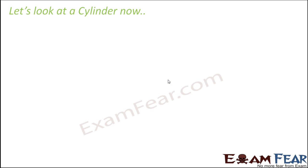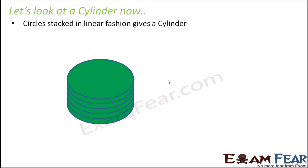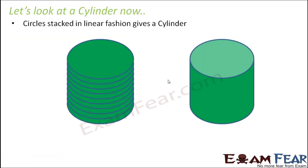Let's take the example of a cylinder. A cylinder is a three-dimensional object, and we will see that we can build a three-dimensional cylinder from a two-dimensional circle. You can do this at home using coins — coins are circular. When you stack one coin above the other and keep stacking multiple coins together, you get a cylinder. By stacking coins you are building the third dimension. The circle, which was a two-dimensional shape, gives rise to a three-dimensional cylinder.